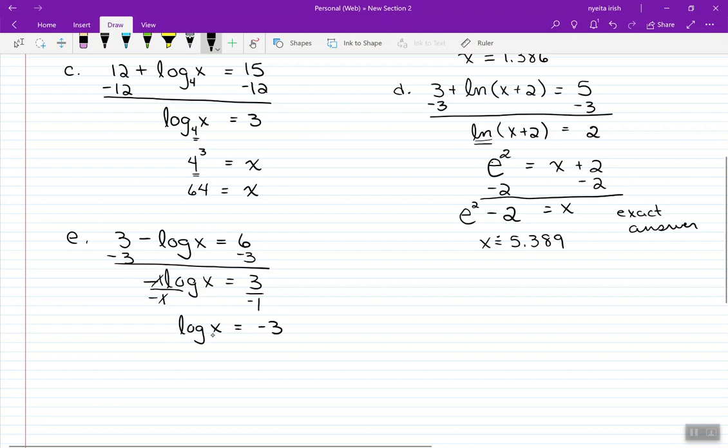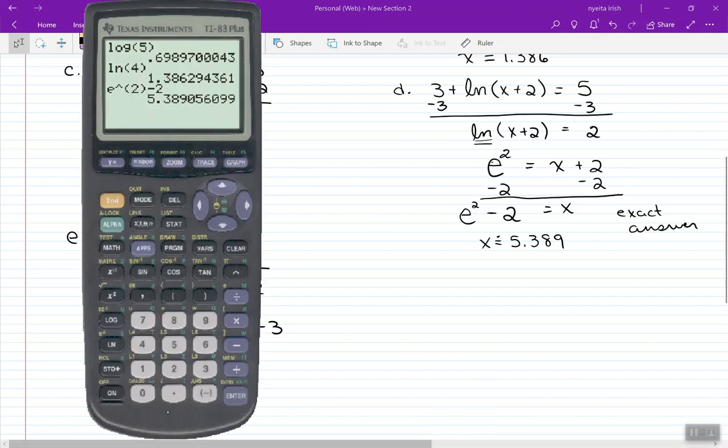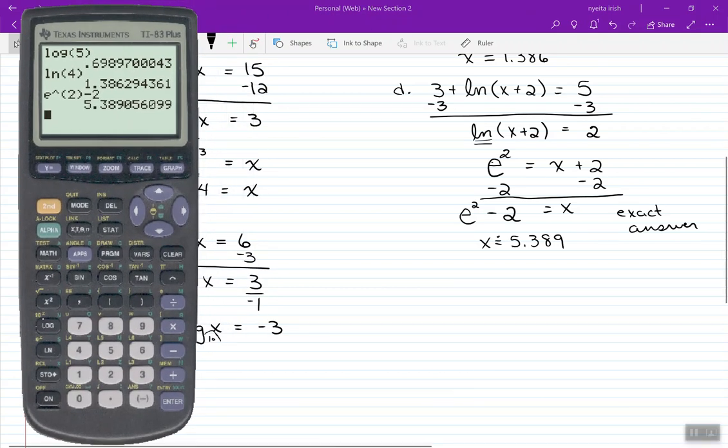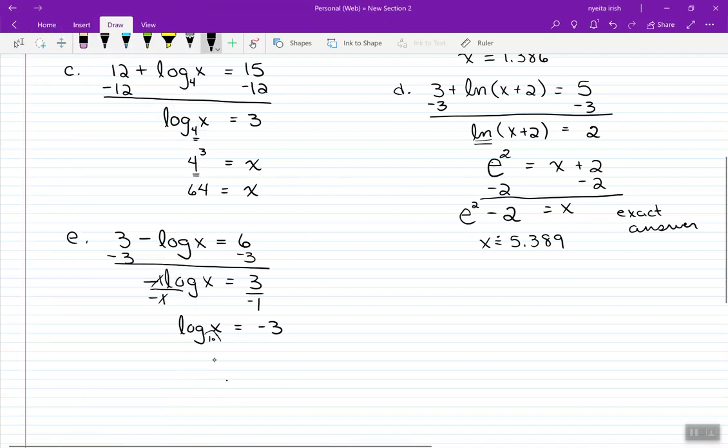I have a logarithm, so I've got to think what undoes a logarithm, and that would be the exponential. I need to write an exponent. I've got to figure out what the base is. The base, when it's not seen on a log function, is the common log base 10. Take a look at your calculator. You've got the LOG button, and right above it is 10 to the x. That's your common logarithm. So that's 10 to the negative 3 equals x.